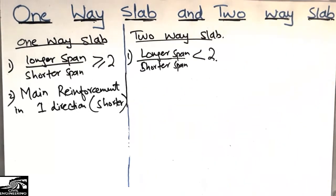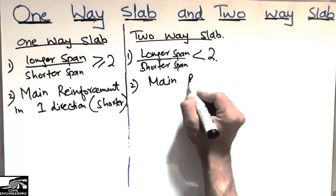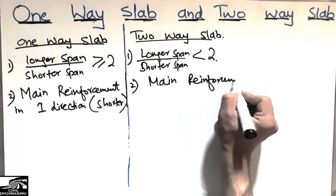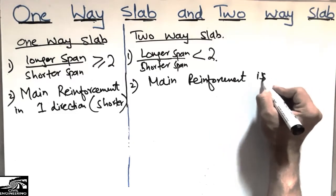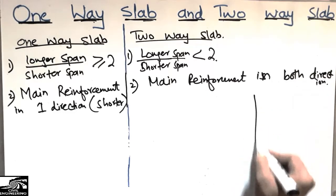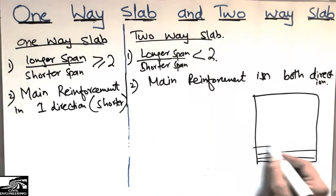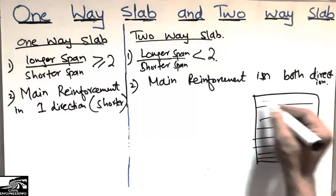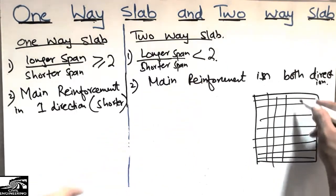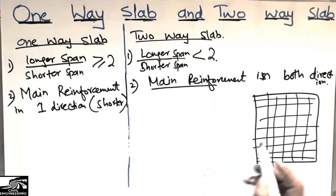In the case of the two-way slab, there is a difference in their main reinforcement. The main reinforcement should be provided in both directions — both the longer direction as well as the shorter direction. Since the longer-to-shorter span ratio is less than 2, we provide main reinforcement in both directions, whereas in the one-way slab we provide it only in the shorter direction.